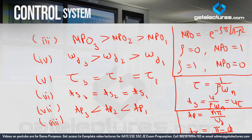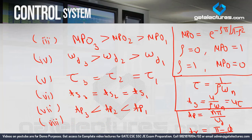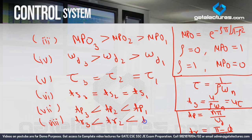Since phi 3 > phi 2 > phi 1 and omega D3 > omega D2 > omega D1, and rise time is inversely related to both, we get: TR3 is less than TR2 is less than TR1. This is the eighth conclusion.